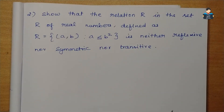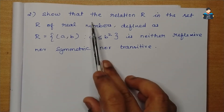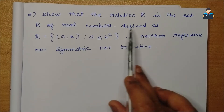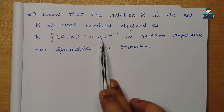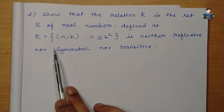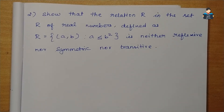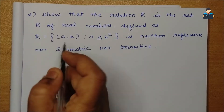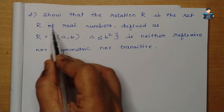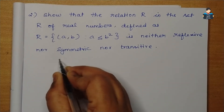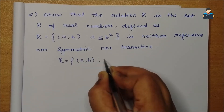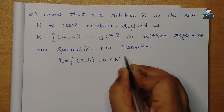Hello everyone, welcome to our channel. In this video we look at Class 12 NCERT Maths, Chapter 1 Relations and Functions, Exercise 1.1, Question No. 2. We need to show that the relation R in the set R of real numbers defined as R = {(a,b) : a ≤ b²} is neither reflexive, nor symmetric, nor transitive.